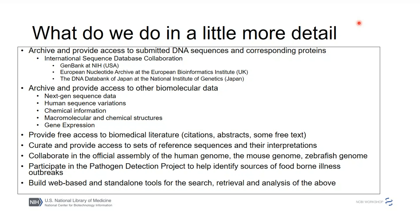The largest chunk of molecular data at NCBI is the next-gen sequence data in the Short Read Archive. We also have a SNP database, chemical information, chemical structures, and gene expression information. The busiest part of our service is the biomedical literature — we have PubMed with free access to abstracts, and PubMed Central with free full text. We also curate reference sequences and provide annotation for genomes like human, mouse, zebrafish, and chicken.